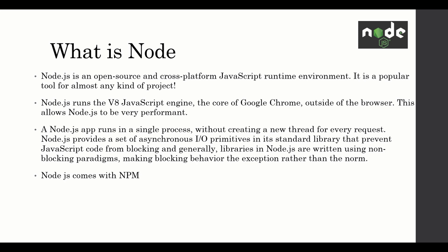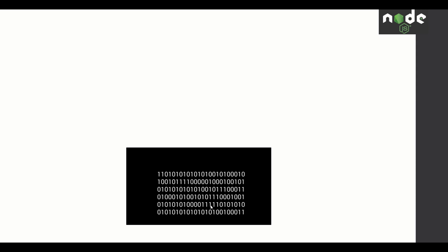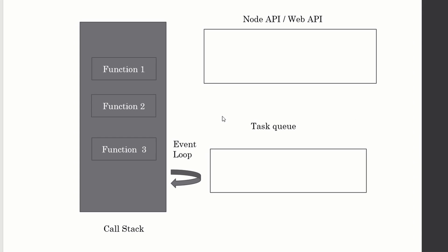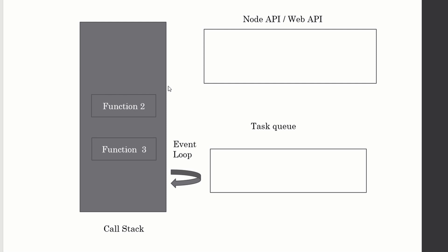I'm going to link a talk from JS Conf in the description if you're not 100% clear on what asynchronous means. JavaScript is a single-threaded programming language — it only has one call stack. Function one runs first, then function two, then function three. It does one thing at a time: once function one gets called it pops out of the call stack, then function two, then function three.